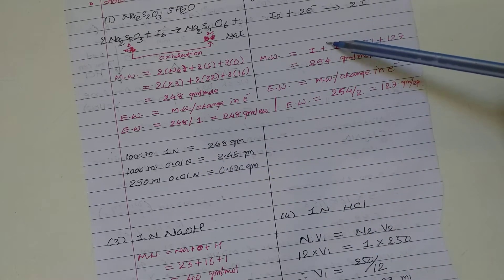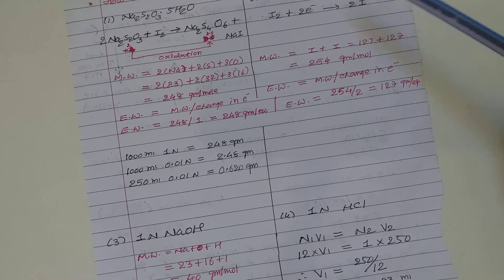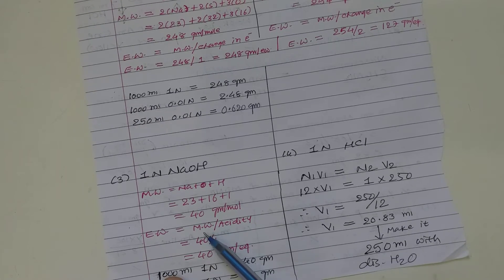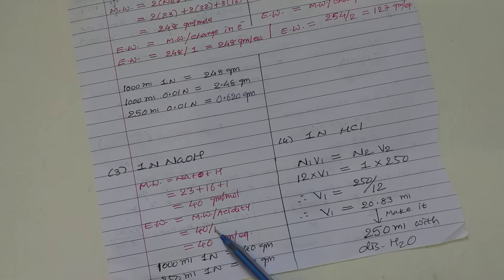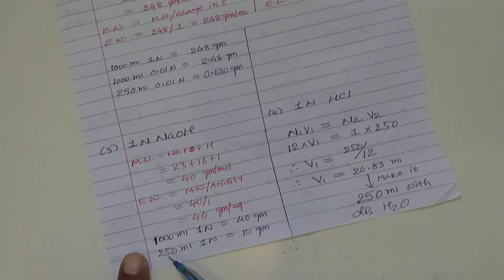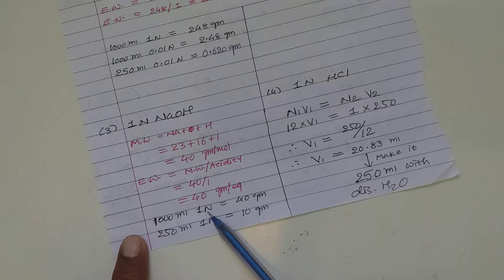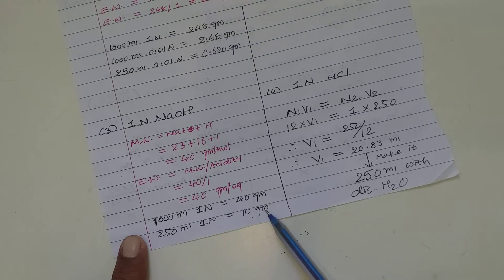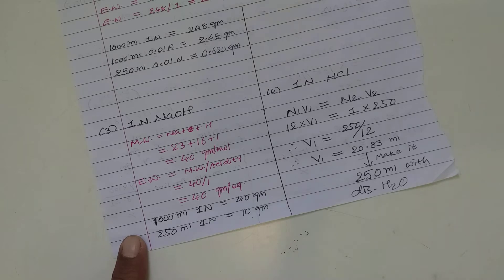Similarly, we can prepare 0.01 normal iodine solution, 1 normal NaOH solution, and 1 normal HCl solution. The molecular weight of sodium hydroxide is 40 g/mol and equivalent weight equals molecular weight upon acidity, so 40 upon 1, giving 40 g/equivalent. For 1000 ml of 1 normal solution, 40 g is required; for 250 ml of 1 normal solution, 10 g is required. Weigh exactly 10 g of sodium hydroxide, dissolve in distilled water, and make total volume to 250 ml.